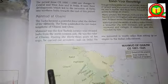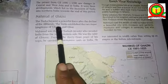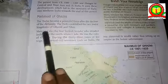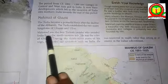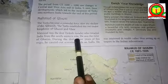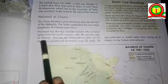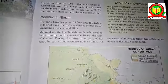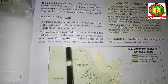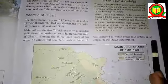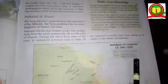The next topic is Muhammad of Ghazni. The Turks became a powerful force after the decline of the Abbasids. The Turks established two major kingdoms of Ghazni and Ghor. Muhammad was the first Turkish invader who invaded India from the north-western side. He was the ruler of Ghazni, and during his 33 years of reign he carried out 17 raids on India.